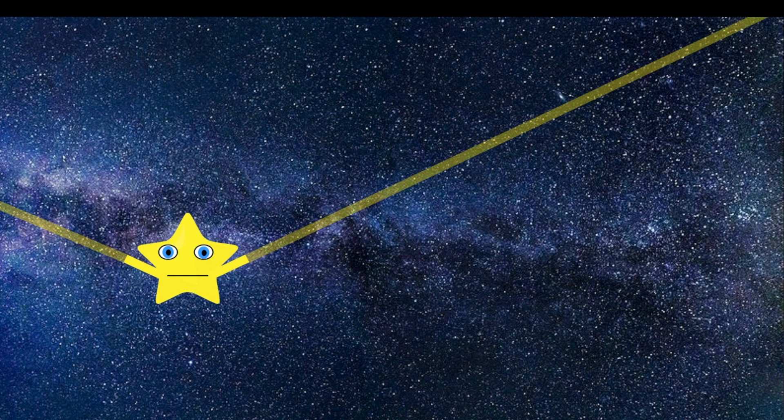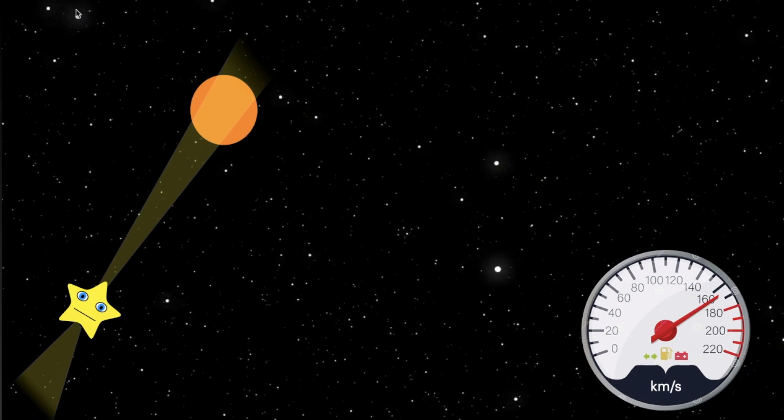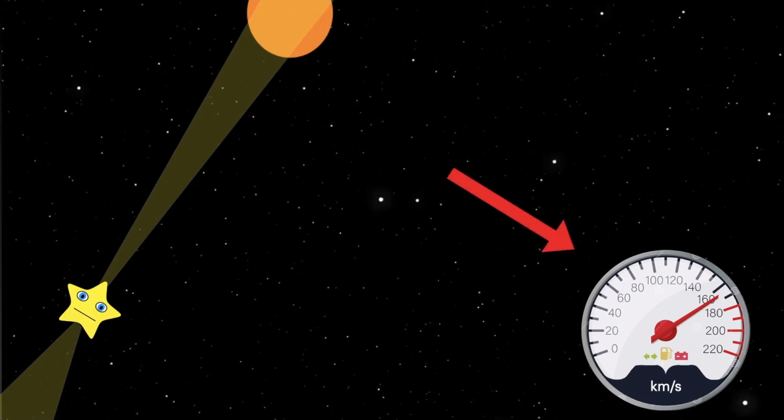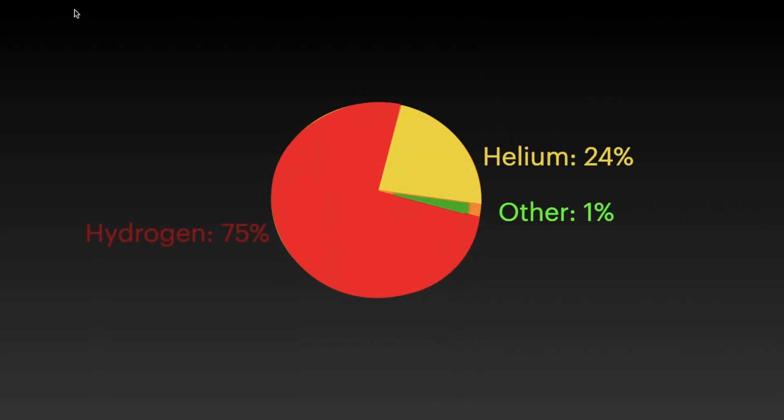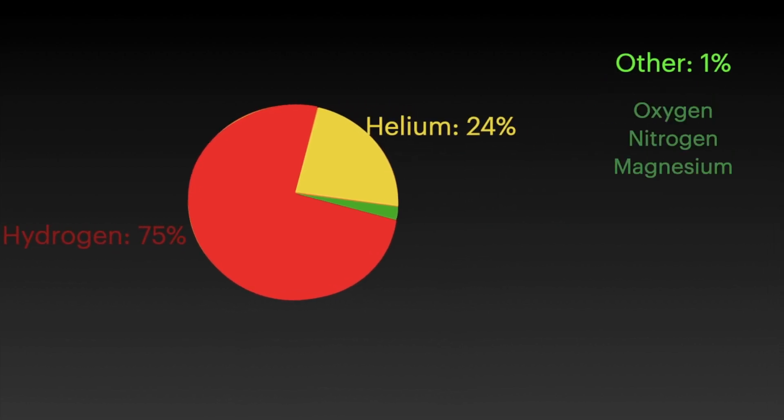Herbig-Haro objects move at extremely fast speeds. In fact, they can move at several hundreds of kilometers per second. They are made up of mostly hydrogen and helium, although they can have other gases, such as oxygen, nitrogen, and magnesium.